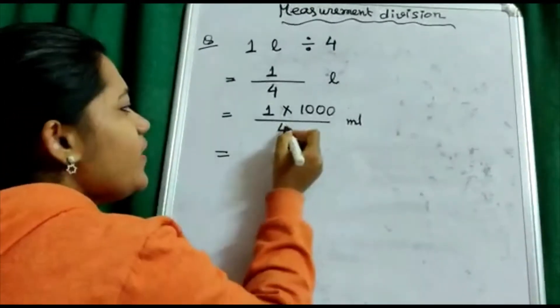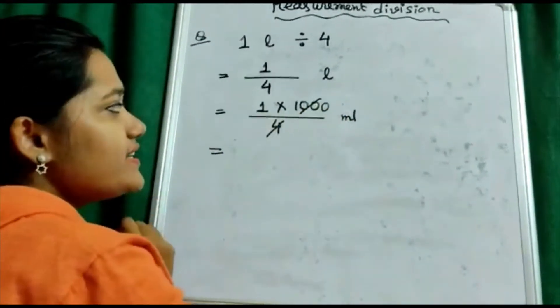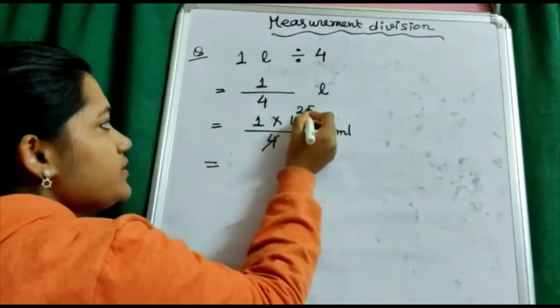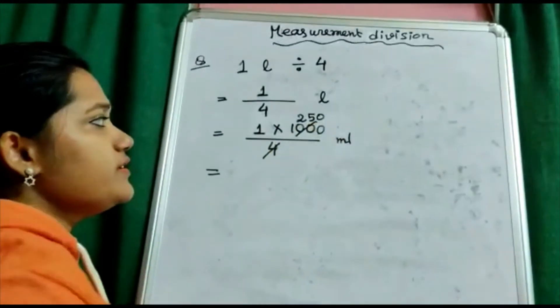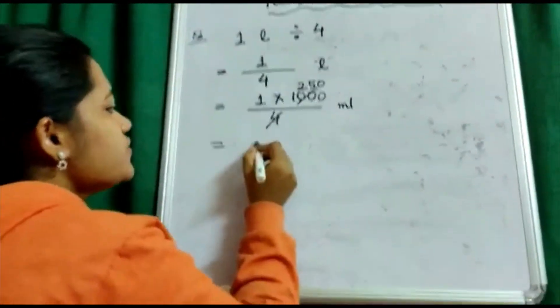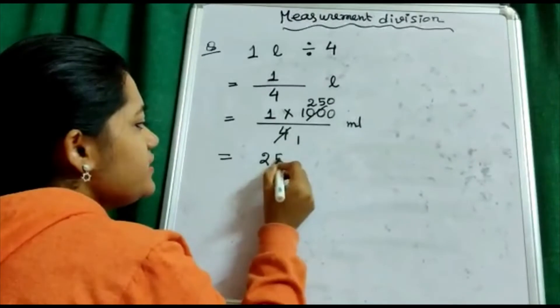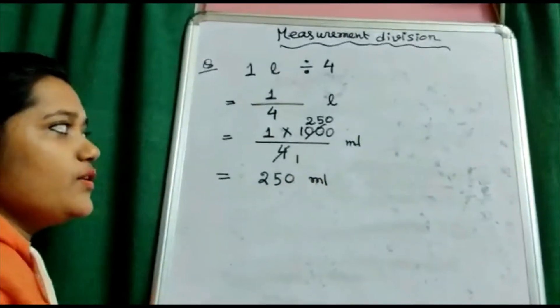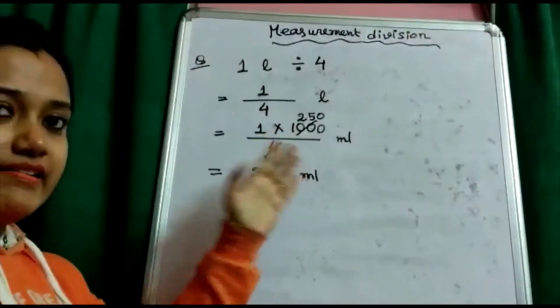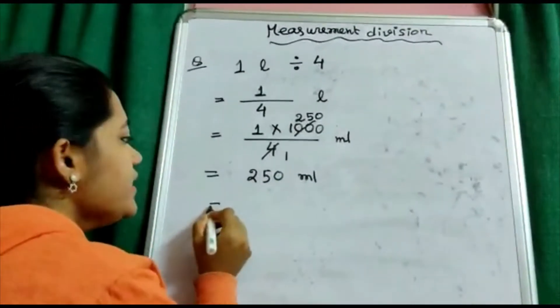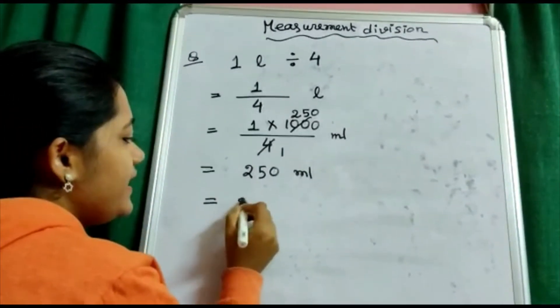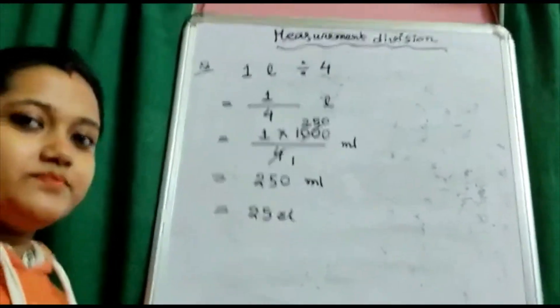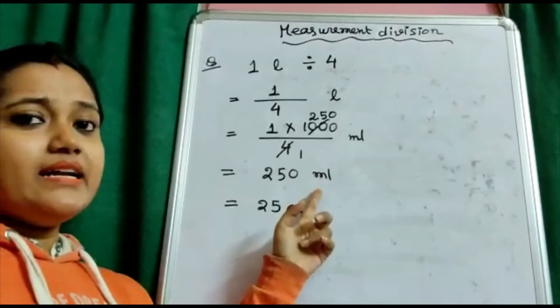Now I can do the fraction reduction. So two and here it is one, so 250 ml. Or if I have written till 100, then also it is okay, or it can be written as 25 centiliter.